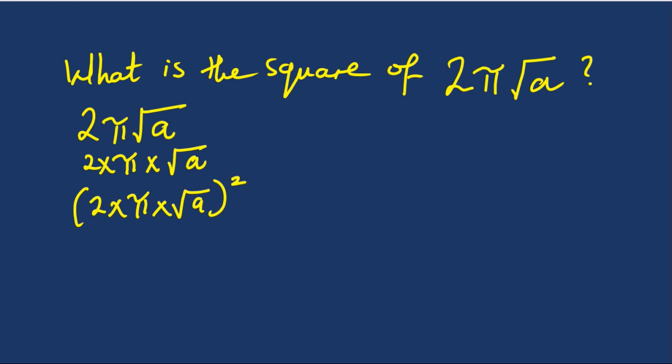Then I'll open the bracket and make each of these terms raised to power 2. So that will be 2 raised to power 2, times π raised to power 2, times the square root of a raised to power 2.